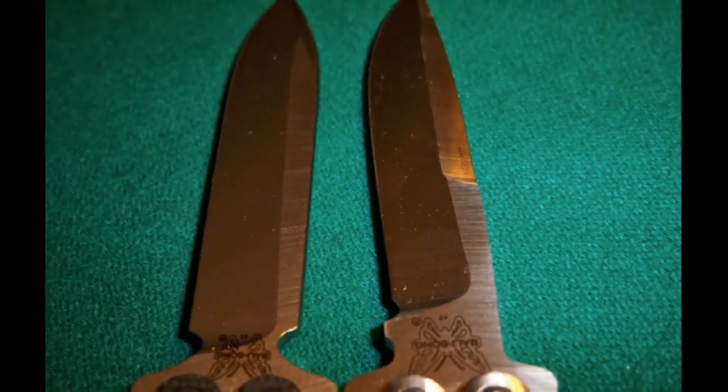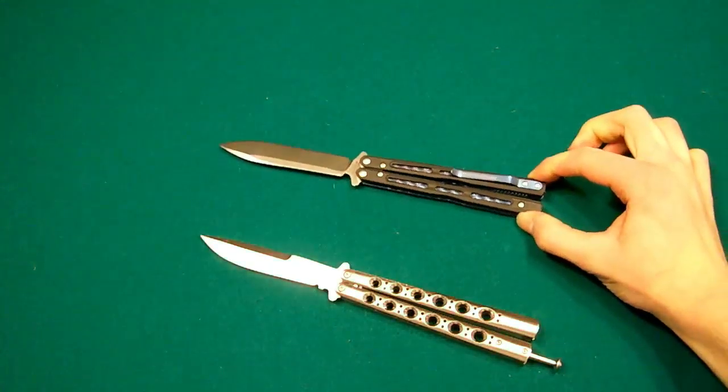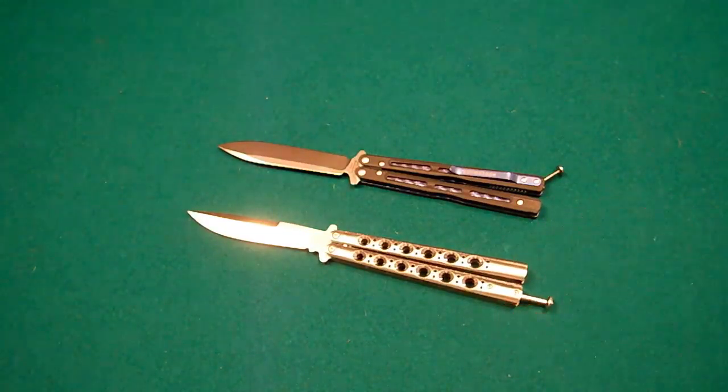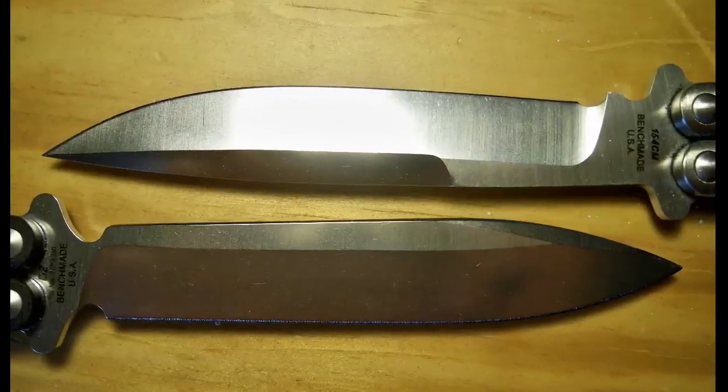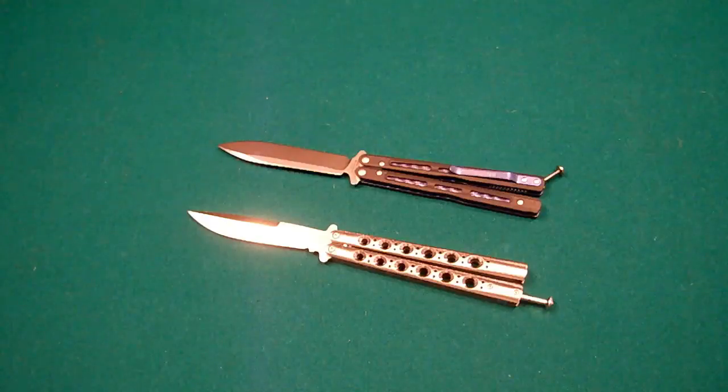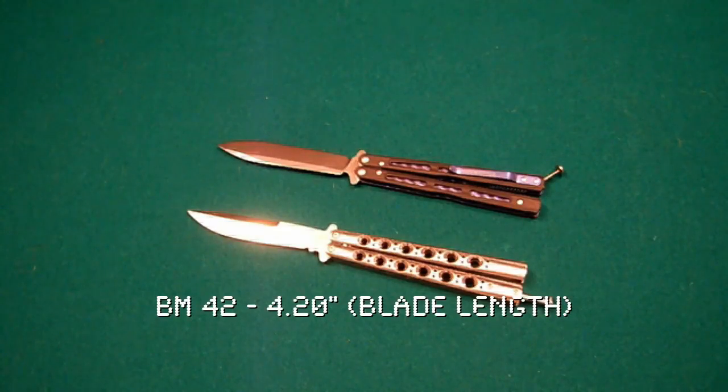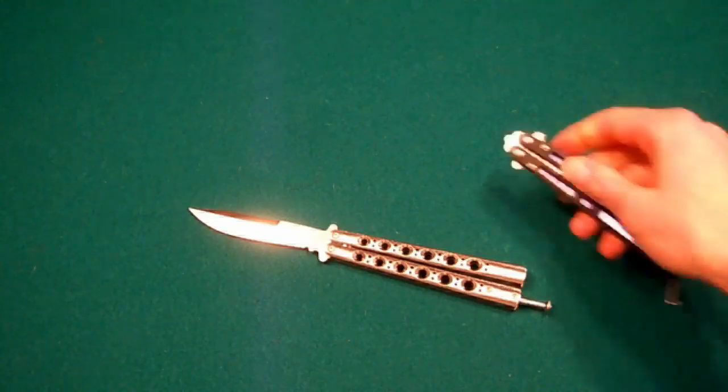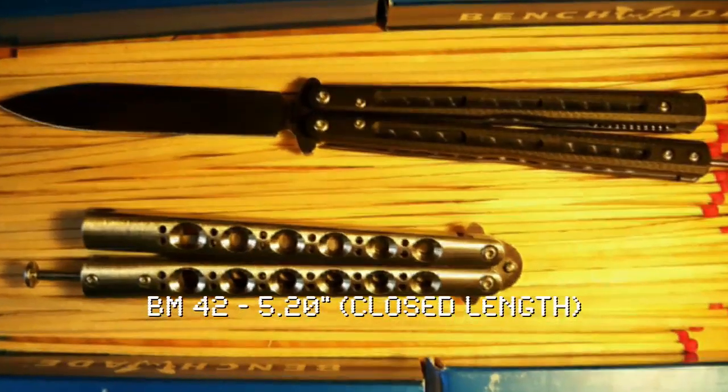We will now look at the blade length. Since these knives are both full sized balisongs, they are fairly similar in blade length and just overall length of the whole knife. It is kind of surprising that the 51 has a shorter overall length but it actually has a longer blade length than the 42. So the 51's blade length comes in at around about 4.25 inches, whereas the 42's blade length comes at around about 4.20 inches. The closed length of the 51 is 5.10 inches, and the closed length of the 42 is 5.20 inches.